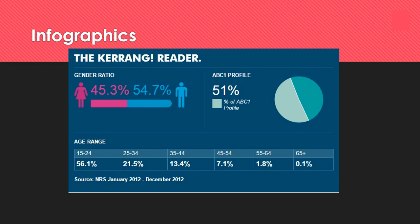All this data allows you to create infographics — a nice visual way of representing an audience. Using NRS or PAMCO data, a profile for the Karang magazine reader shows gender is roughly even but slightly more male, with an almost 50-50 split between ABC1 and C2DE readers. The majority of readers are aged 15 to 24, meaning you can target a huge range of people — males, females, different income levels — all within that age bracket.